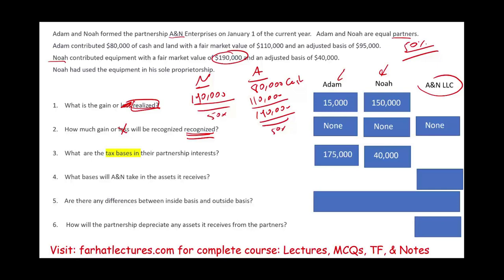What basis does the partnership take in the assets received? The partnership takes the contributed basis of each asset: $80,000 for cash, $95,000 for the land, and $40,000 for the equipment, totaling $215,000. These are called the inside basis — the basis of the assets inside the partnership. The partners' outside bases are $175,000 for Adam and $40,000 for Noah. At this point, there are no differences between inside and outside basis, though differences can arise in other situations.